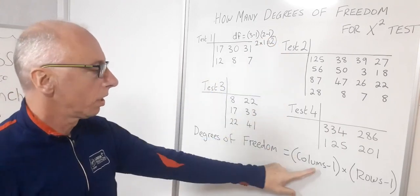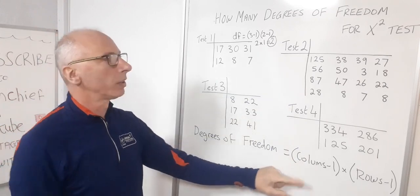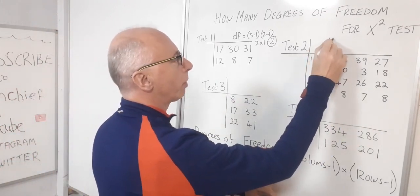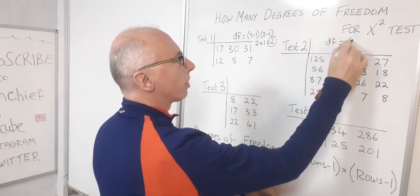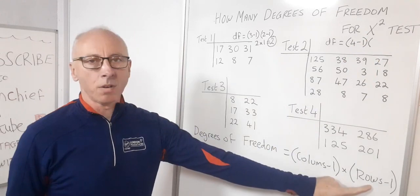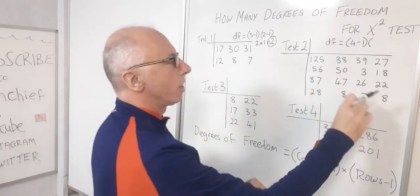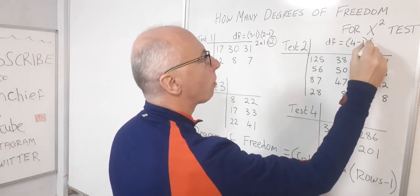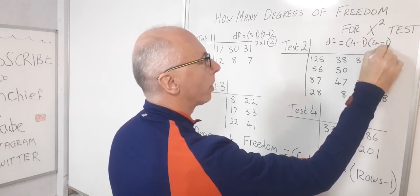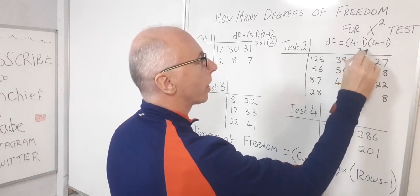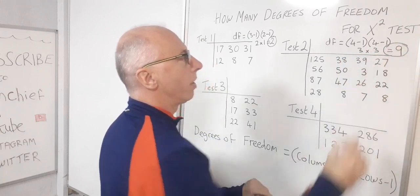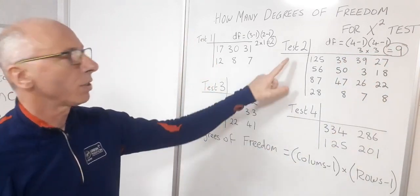Test two: columns minus one — we've got four columns, so four subtract one — multiplied by the rows minus one. There are three rows, so three subtract one. That becomes three times three, which gives us nine degrees of freedom for test two.